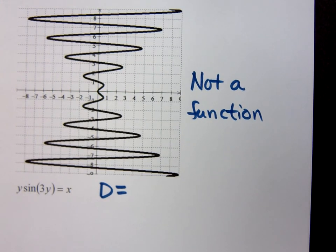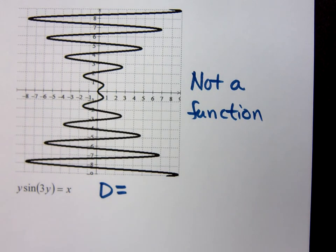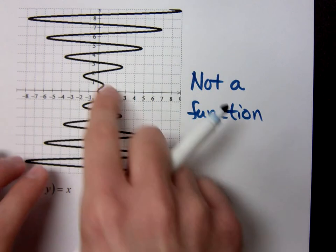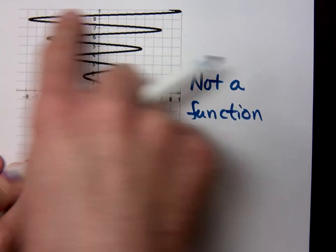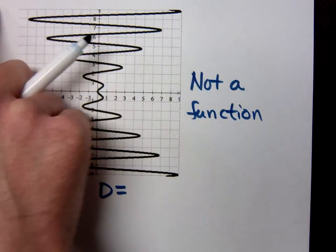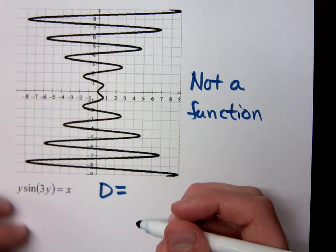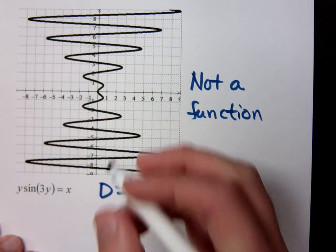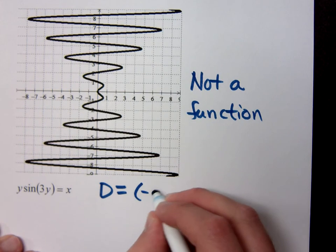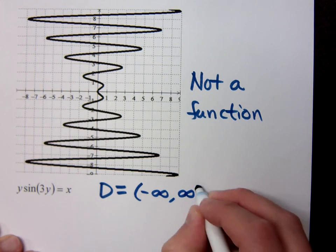How can you get the domain if you can't see the domain? It's constantly getting bigger. How can I see the domain? I can't see what it's doing, but you said it's getting bigger, right? So if this keeps oscillating back and forth, it's going to keep getting bigger and bigger as you go up. So what are those x values included? It'd be negative infinity to infinity, but it's an assumption.